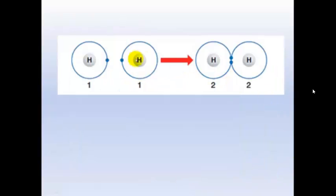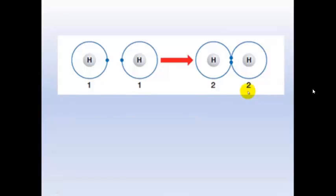If we have a look at hydrogen, 2 hydrogen atoms each with 1 electron in its outside shell will pair up and share those electrons so that they both have 2 electrons and a full outside shell.